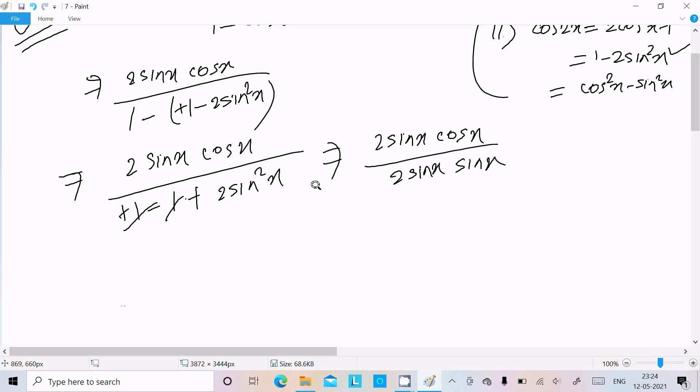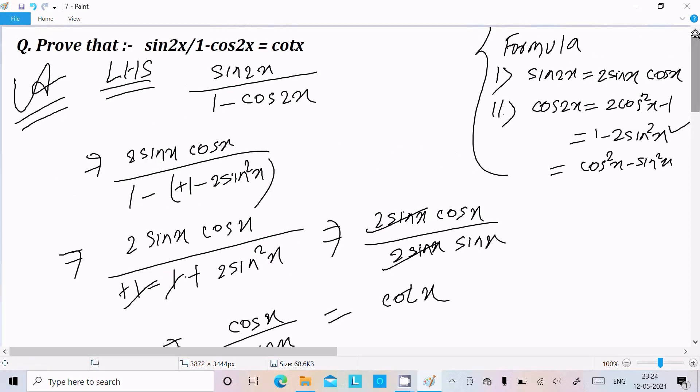So 2sin²x, sinx into sinx, this cancels. And here you can get cosx divided by sinx. That is equal to cotx. So cotx comes there.